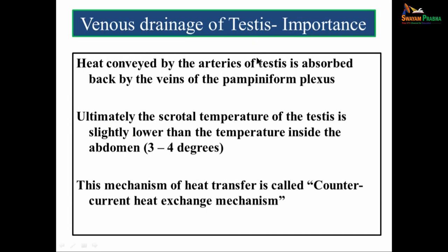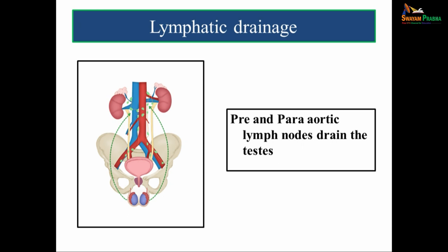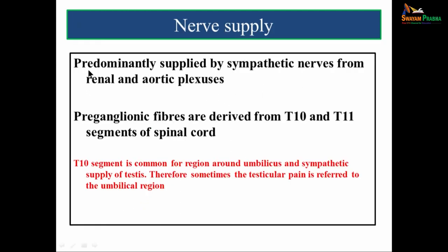The importance of venous drainage: the heat conveyed by the arteries of the testis is absorbed back by the veins of the pampiniform plexus. The scrotal temperature is slightly lower than inside the abdomen by about three to four degrees — this mechanism is called the counter-current heat exchange mechanism. The lymphatic drainage is predominantly by pre- and para-aortic lymph nodes. The nerve supply is predominantly by sympathetic nerves from renal and aortic plexuses; preganglionic fibers are from T10 and T11 spinal cord segments. T10 is common for the umbilical region and the testis, so testicular pain is sometimes referred to the umbilical region.